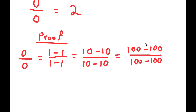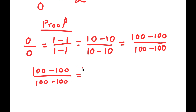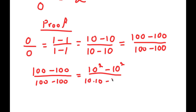All right, so this is where we change lanes a little. For (100 minus 100) over (100 minus 100): 100 is the same thing as 10 times 10, which is the same as 10 squared. So for my numerator, I'm going to rewrite 100 minus 100 as 10 squared minus 10 squared. And for my denominator, I'm going to rewrite 100 as 10 times 10. These two are the same thing — 10 times 10 is the same as 10 squared. At the end of the day, 10 squared minus 10 squared is 0, and 10 times 10 minus 10 times 10 is 0 as well.